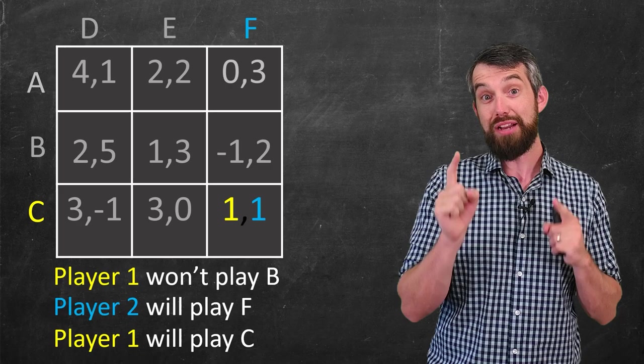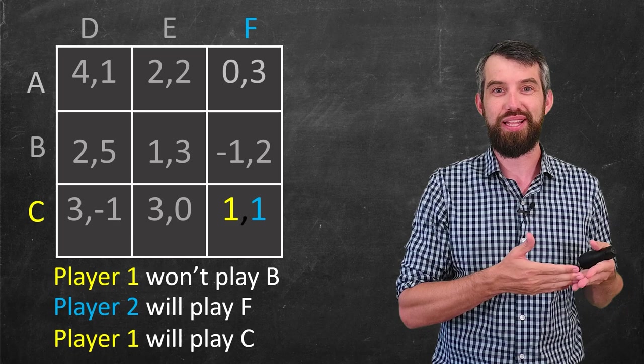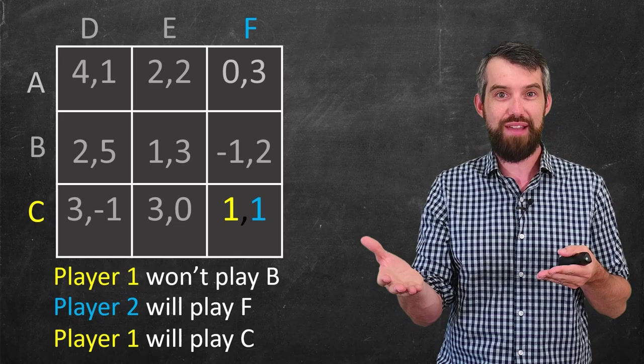Now, I do want to note one kind of funky thing. If you look at this payoff matrix, you'll notice that there's actually better squares for some of the players. Like, for example, the one where player one plays B, and player two plays D. This is going to give you two five as payoff, which is way bigger than one one.